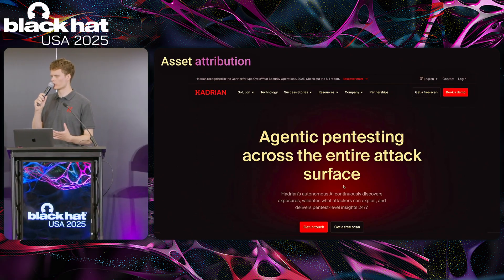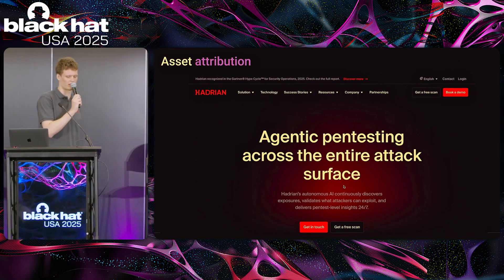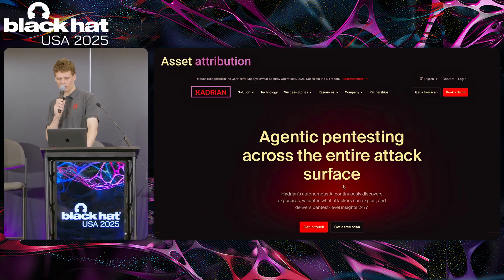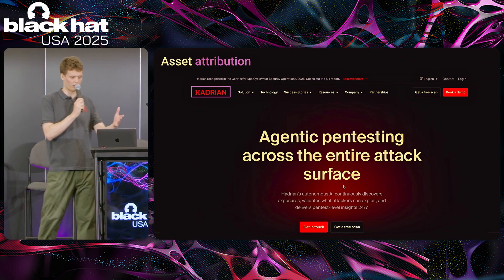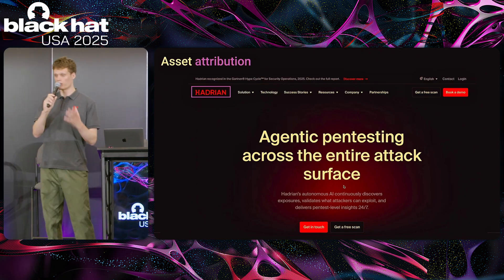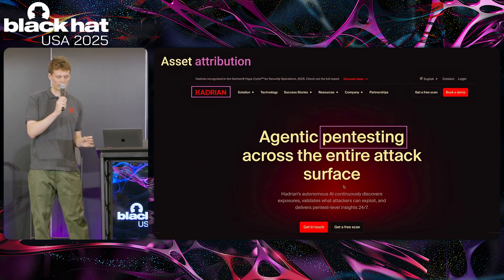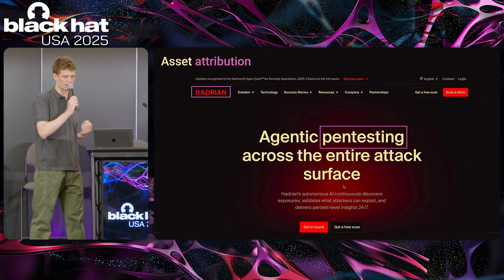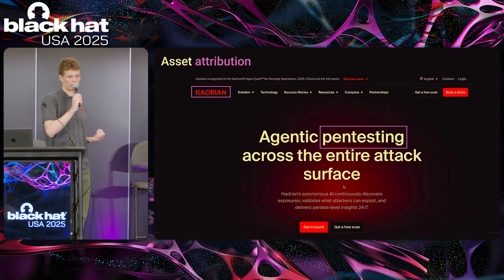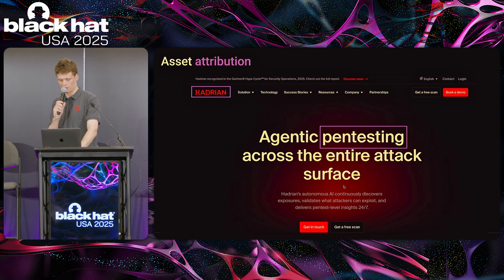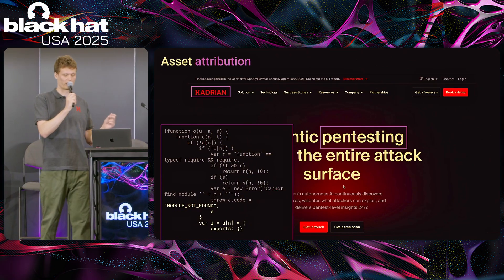Another sensing step is asset attribution — how do we tell if a web page belongs to a specific organization? Our AI looks at logos that might be there, for example the Hadrian logo. It also looks at keywords; in Hadrian's case, the phrase 'pen testing' would be a good reason to believe a web page could belong to Hadrian. It also looks deeper, analyzing the actual code used to run the web application.